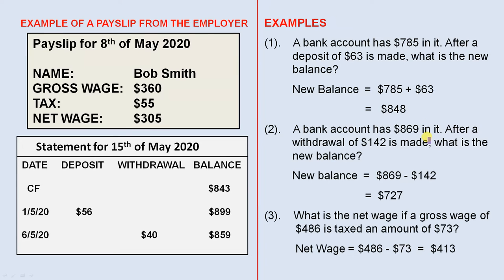A bank account has $869 in it. After a withdrawal of $142 is made, what is the new balance? The new balance is $869 minus $142, and that's $727.